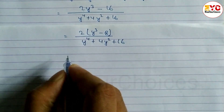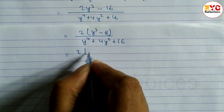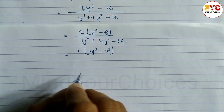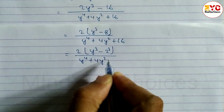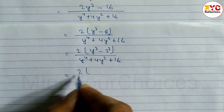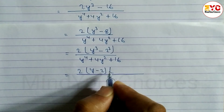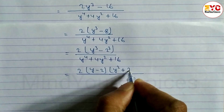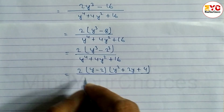Now convert to a cube minus b cube form. In place of 2y cubed minus 8, we write 2 to the power 3, meaning 8, divided by (y to the power 4 plus 4y squared plus 16). Now using the formula for a cube minus b cube: a minus b times (a squared plus ab plus b squared), so y minus 2 times (y squared plus y times 2 plus 2 squared), which gives y squared plus 2y plus 4.